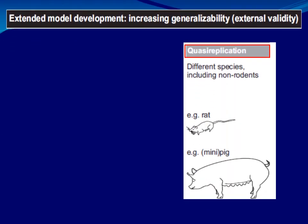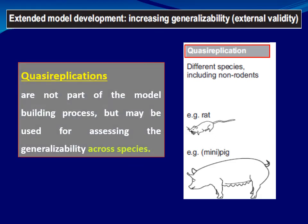The last type of replication is quasi-replication. This is not part of the model-building process, but it may increase the generalizability of the model across species. The same procedure is repeated in different species — rats, mice, guinea pigs, non-rodents — to determine whether the same results are obtained. These four replication types — partial, differential, conceptual, and quasi — together build external validity.